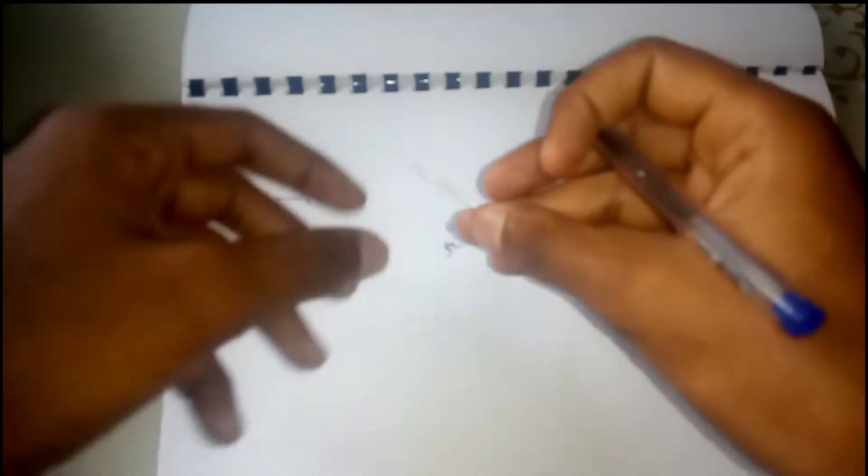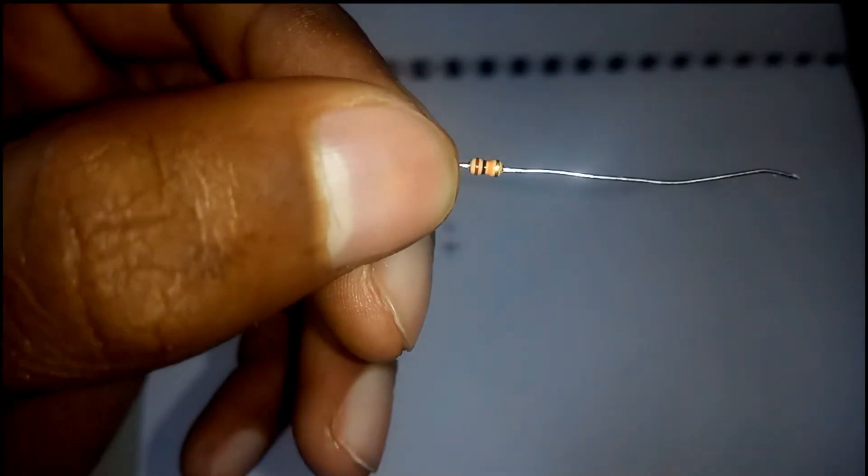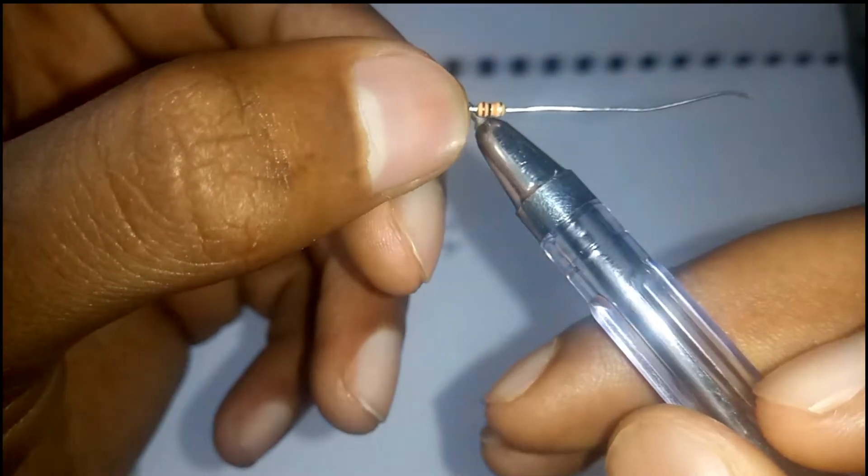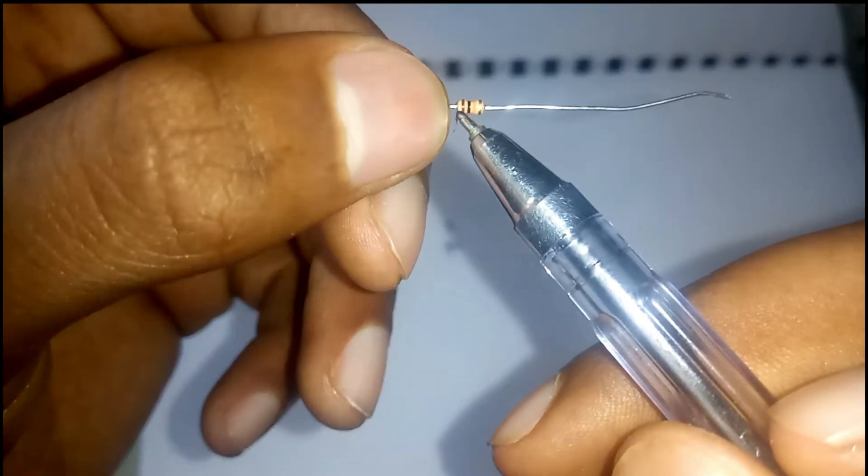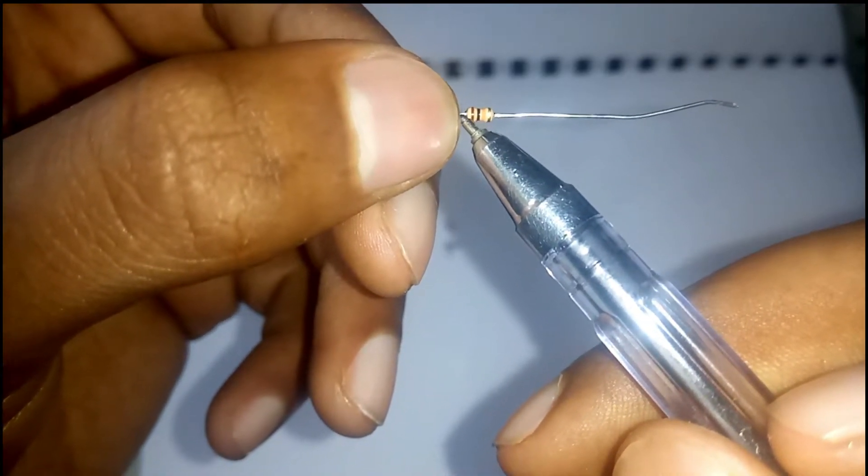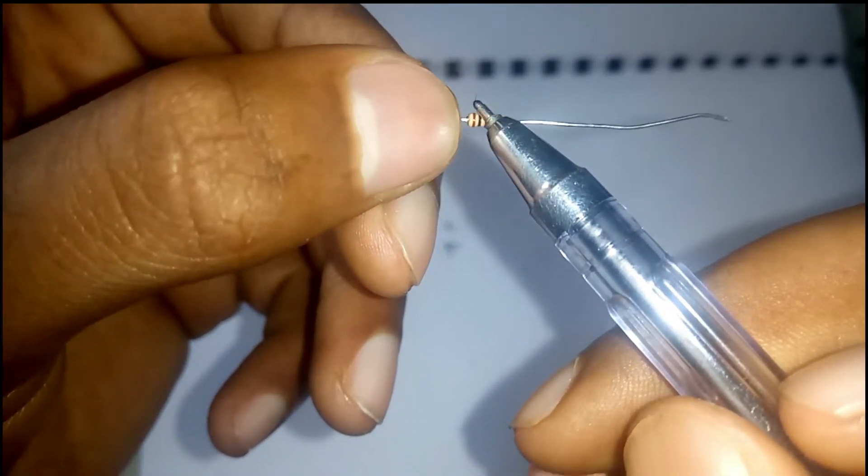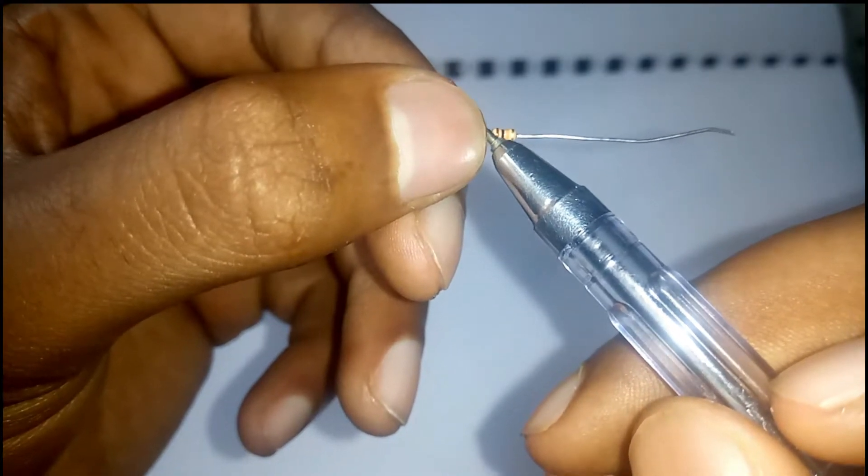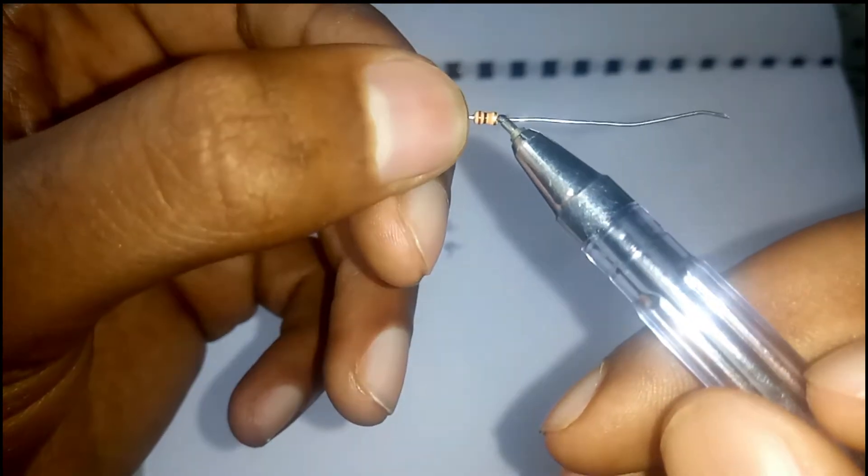For example, if you will determine the value of the resistor, look at the golden color or silver color. Black is zero, brown is one, red, orange, yellow, green, blue, violet, gray, white, gold, silver. Zero is the lowest value.